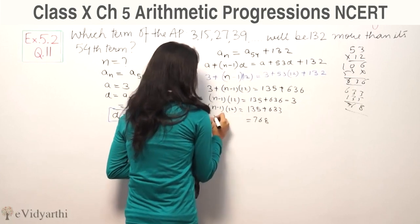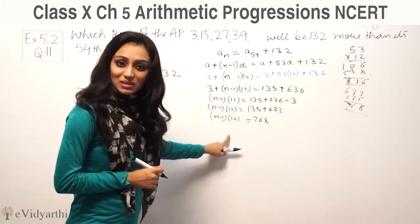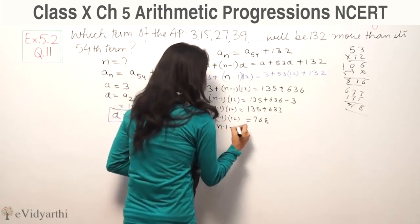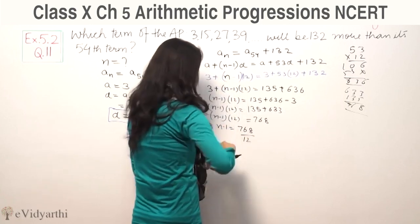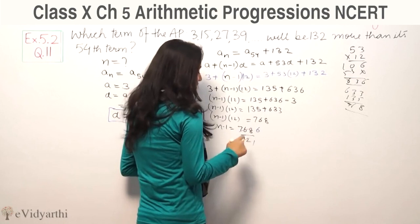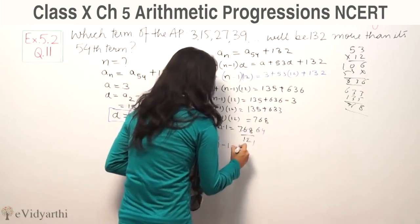Dividing both sides by 12, we get n minus 1 equals 768 divided by 12, which equals 64. Therefore n minus 1 equals 64.